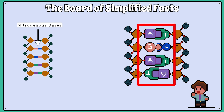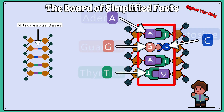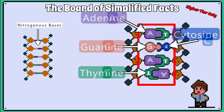There are four possible bases which are labelled as A, T, C, or G. Higher tier candidates must also learn the full name for each base: A for adenine, T for thymine, C for cytosine, and G for guanine.